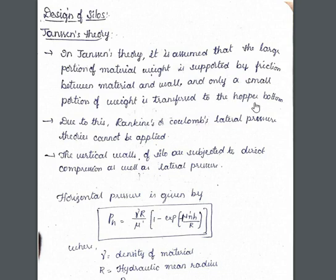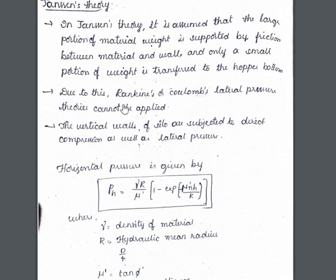Only a small portion of weight is transferred to the hopper bottom. Previously, while designing bunkers, it was assumed that the entire weight of the material inside the bunker is imposed on the hopper. But in Janssen theory, the large portion of material is already supported by friction, and only a small amount is transferred to the hopper bottom. This is the first and very important assumption.